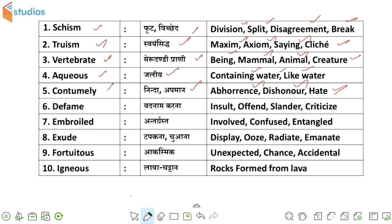Next word we have, this is defame, जिसका मतलब होता है बदनाम करना. इसके synonyms हैं: insult, offend, slander, and criticize.